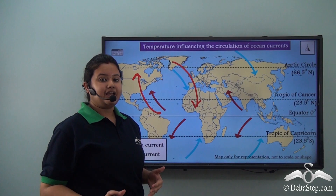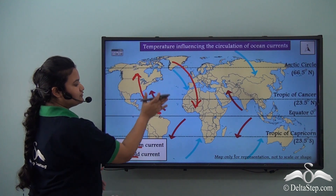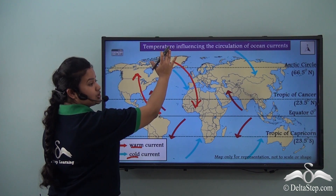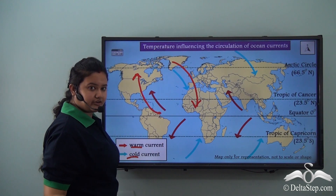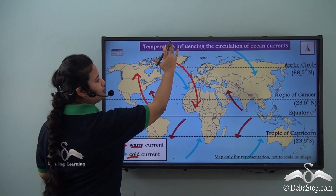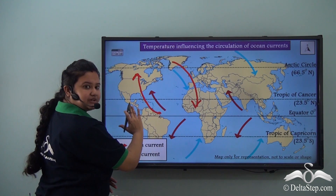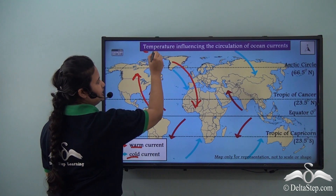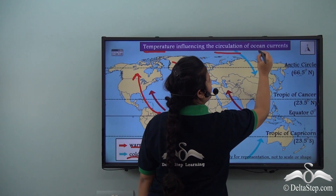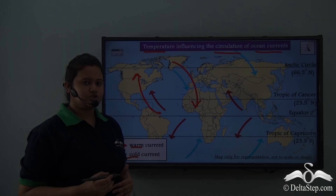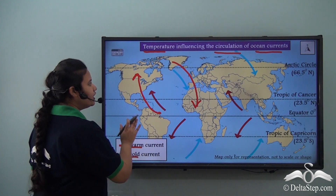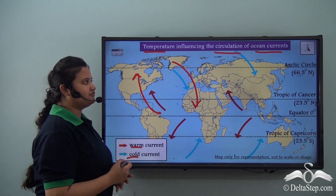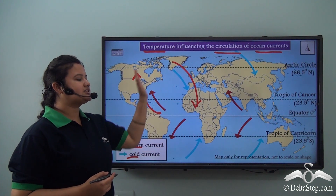The warm currents, being hotter and lighter, rise up and travel from the tropics to the poles. The space left will not remain empty — the cold currents come down because they are heavier, traveling from the poles to the tropics to occupy the empty space. This process continues in a cycle. When warm currents travel through a region they warm it, and when cold currents come down they cool the region. This is how temperature influences the circulation of ocean currents and regulates global temperature.